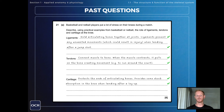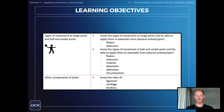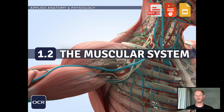And finally, cartilage protects the ends of articulating bones, providing some shock absorption in the knee when landing after a layup. That was the last learning objective for chapter one on the structure and function of the skeletal system. Join me next time as we make a start on the structure and function of the muscular system.